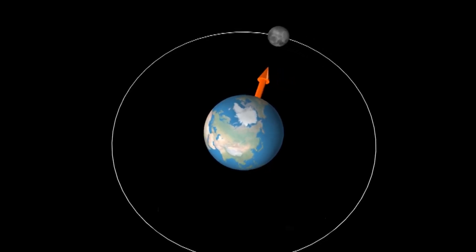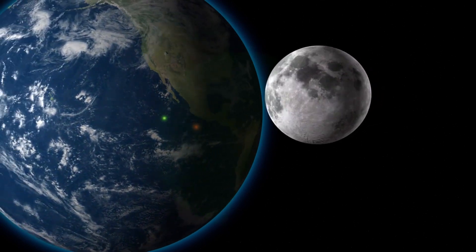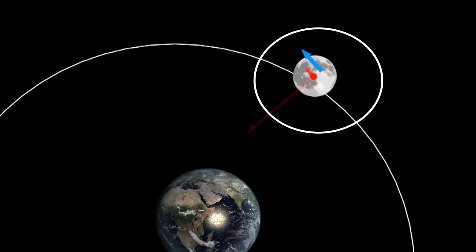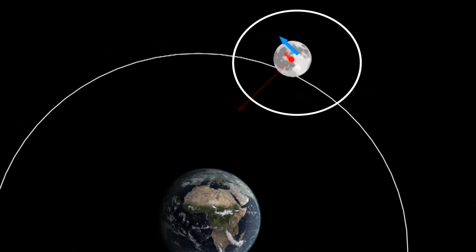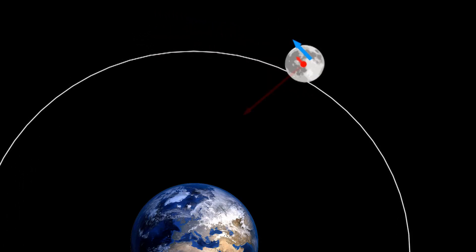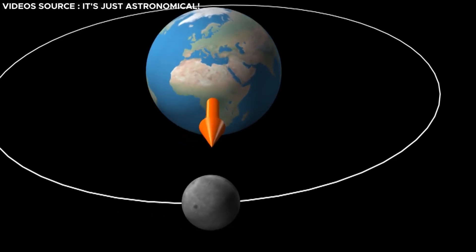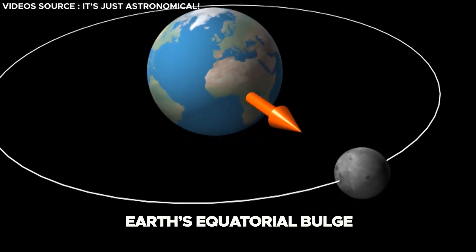Proximity amplifies gravitational forces, leading to a slight acceleration of the moon. This acceleration propels the moon slightly ahead of its anticipated location within its orbital trajectory. As the moon advances beyond its anticipated location, it encounters a gravitational attraction from Earth's equatorial bulge.